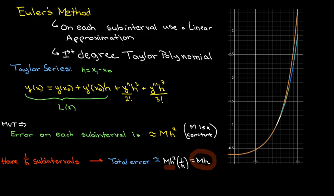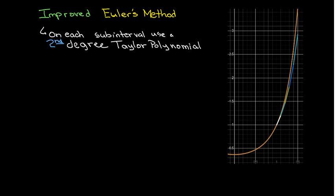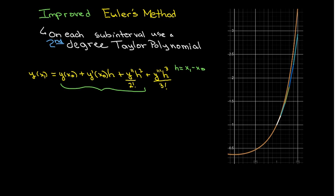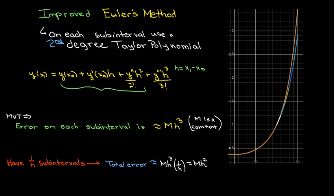Well, suppose that I want to get a better approximation, say one that is of order h squared. Well, what I would do then is take the second degree Taylor polynomial. So in other words, I would take the first three terms of my approximation, and so then the error on each sub-interval would be proportional to h cubed. And then since I have my 1 over h sub-intervals, that means the total error will be proportional to h squared.